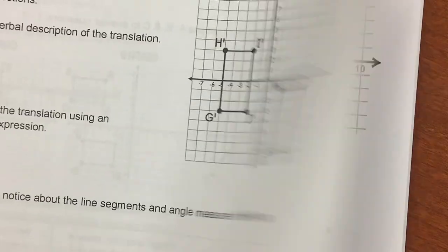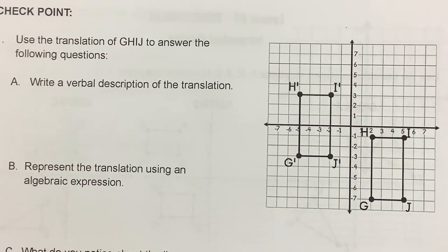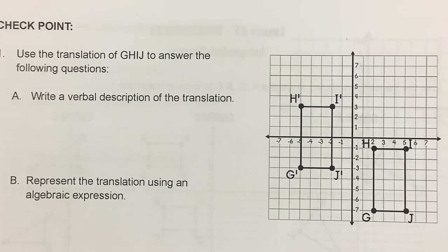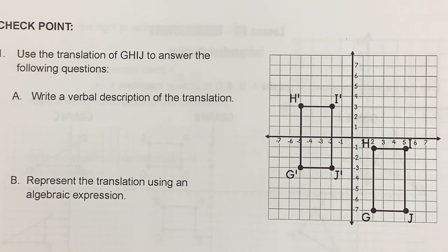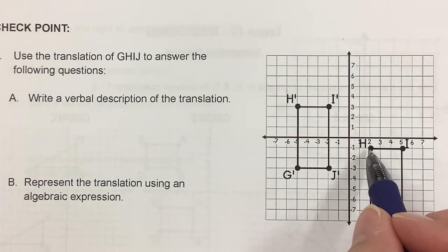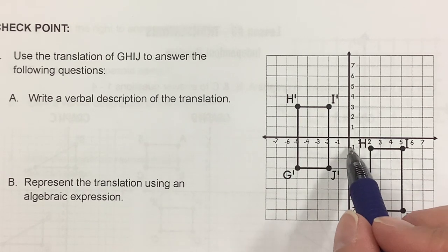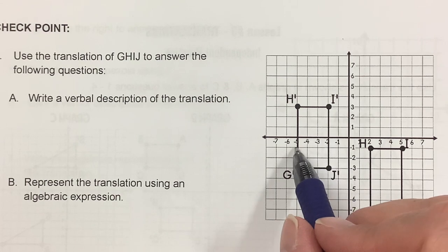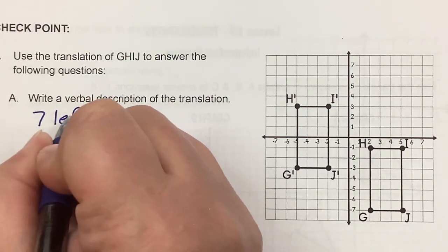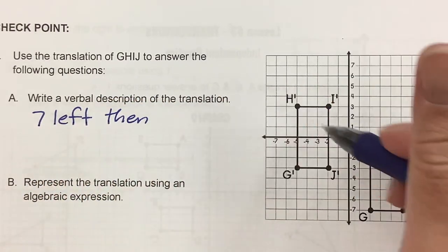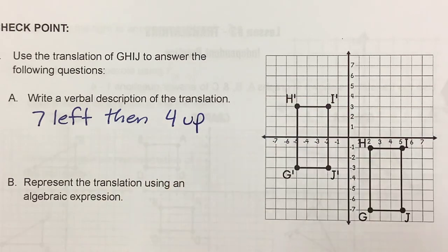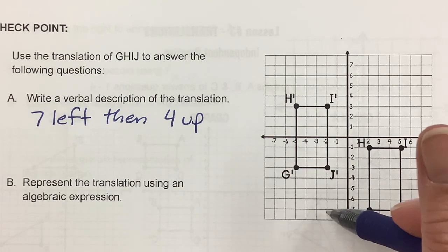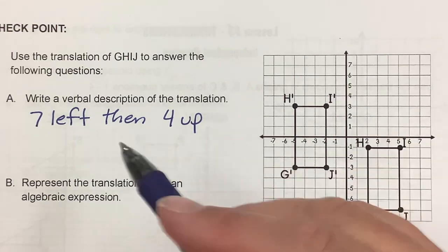Checkpoint — this means you're doing this too. Pause the video and try the problem. Write a verbal description of the translation. I start with the figure without primes. Going to the one with primes: 1, 2, 3, 4, 5, 6, 7 left; then 1, 2, 3, 4 up. I'll check it with point J: 1, 2, 3, 4, 5, 6, 7 left; 1, 2, 3, 4 up. That's the verbal description — seven units left and four units up.